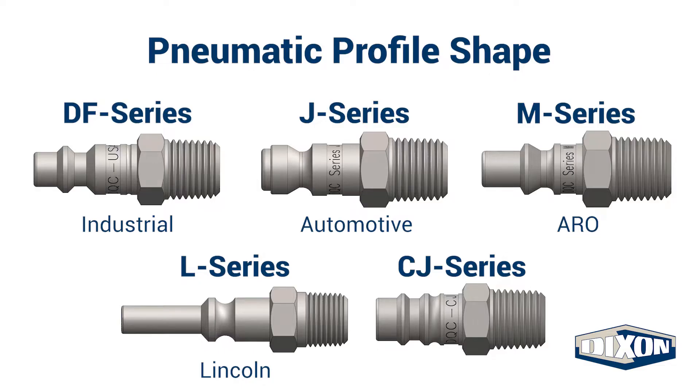The type of interchange can be determined by looking at the profile shape of the plug. Compare your plug shape with the profile chart to identify the Dixon quick coupling pneumatic series.